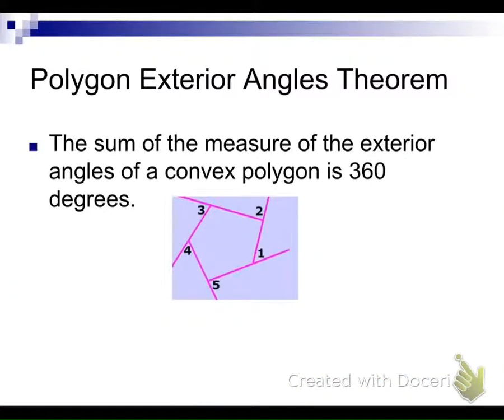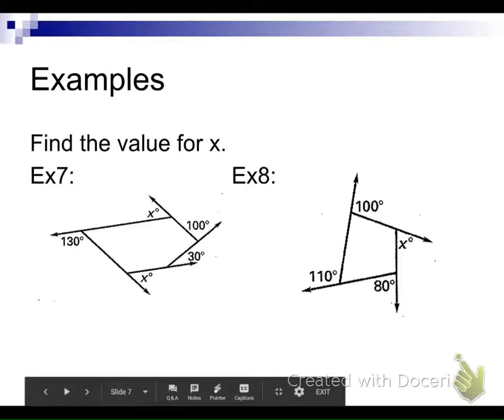So exterior polygon angle theorem, the sum of the measures of the exterior angles of a convex polygon is 360. So the example they gave you here is angle 1 plus angle 2 plus angle 3 plus angle 4 plus angle 5 is going to equal 360.